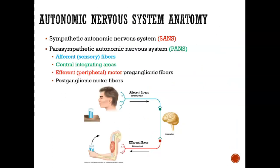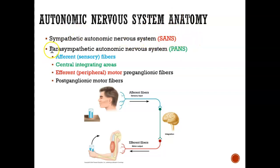Let's look at the anatomy of the autonomic nervous system. We talked about how there's two parts: there's the SANS, which is the sympathetic autonomic nervous system — this is like when you're scared, fight or flight. And then we have the parasympathetic autonomic nervous system, which is when you're resting and relaxed.